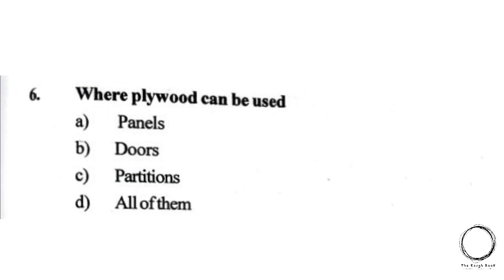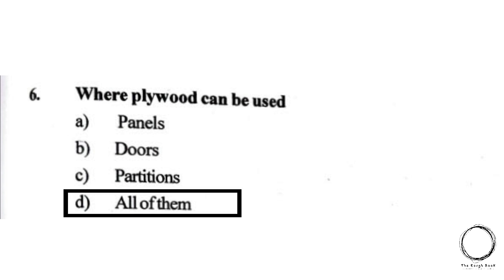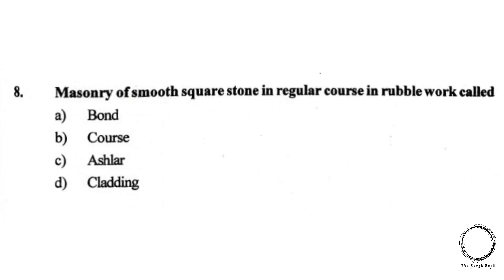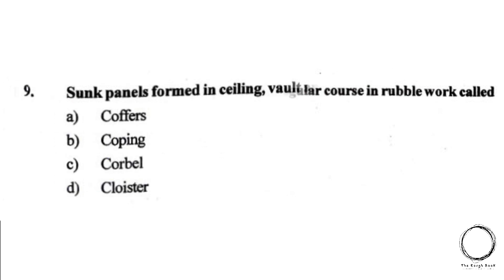Where can plywood be used? Options: A) Panels, B) Doors, C) Partitions, D) All of them. The right answer is D, all of them. Next: masonry of smooth square stone in regular courses in rubble work is called: A) Bond, B) Course, C) Ashlar, D) Cladding. The right answer is C, Ashlar.